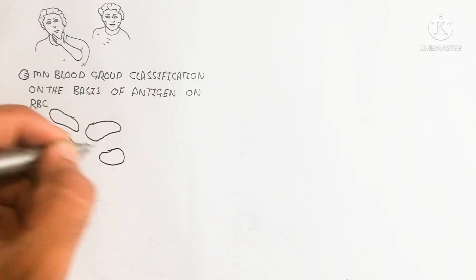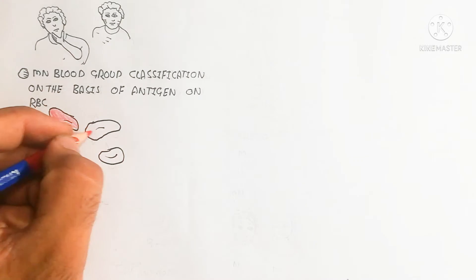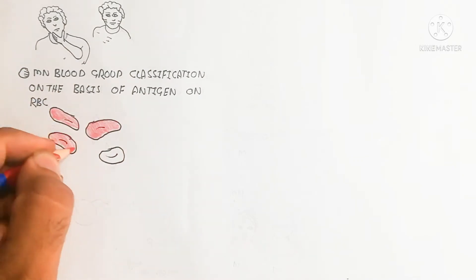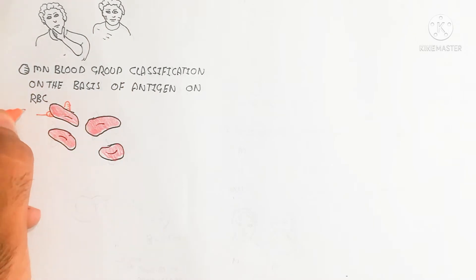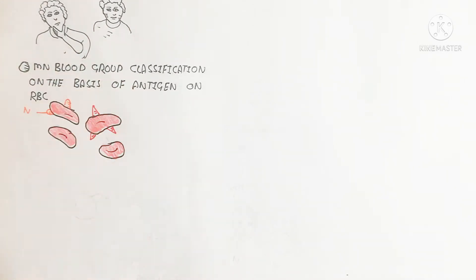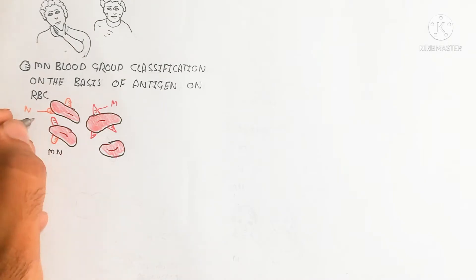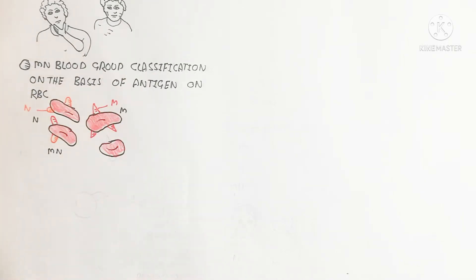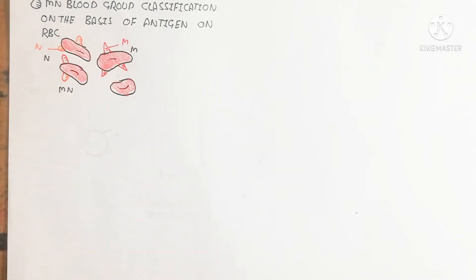Let's begin to understand with a diagram. Here I am drawing a diagram to understand RBC. For example, if only N type antigen is present on the surface of the red blood cell, it is known as N type blood group. If M antigen is present, it is M blood group type. If both antigens are present on the same surface, it is known as MN.